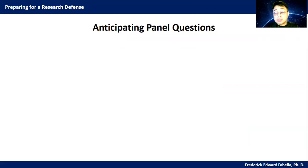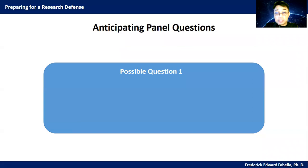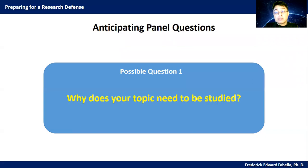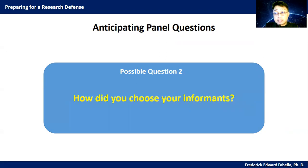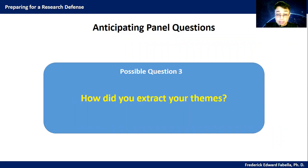So let's consider the possible questions that could be asked. Possible question one: why does your topic need to be studied? This is a very common question asked by panelists. Possible question two: how did you choose your informants? Possible question three: how did you extract your theme? This is about your data gathering, as well as your analysis and interpretation of your data.